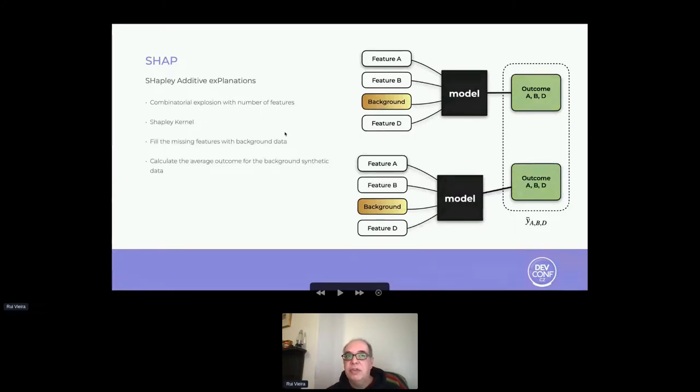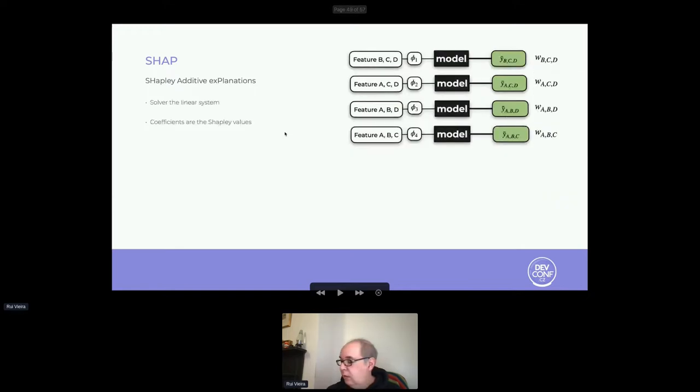There are two problems here. The first problem is that the number of coalitions we need to calculate suffers from a combinatorial explosion with a number of features. So, for all but a few features, we quickly hit prohibitive computational costs. And the second problem is that most models don't allow us to use missing features. The solution that SHAP presents is to use something called the SHAP kernel. The SHAP kernel works by replacing the missing features with values taken from a synthetic background data set. That allows us to create the average output for the coalition with the values from the background data taking the place of the missing features. Once we have the average of the contributions, we have this in the shape of a linear system. If we solve it, the coefficients that we have are equivalent to the Shapley values, and this allows us to quantify the individual contributions of each feature to the final result.